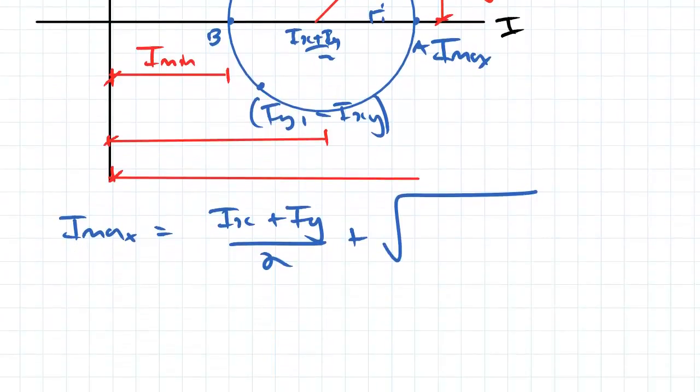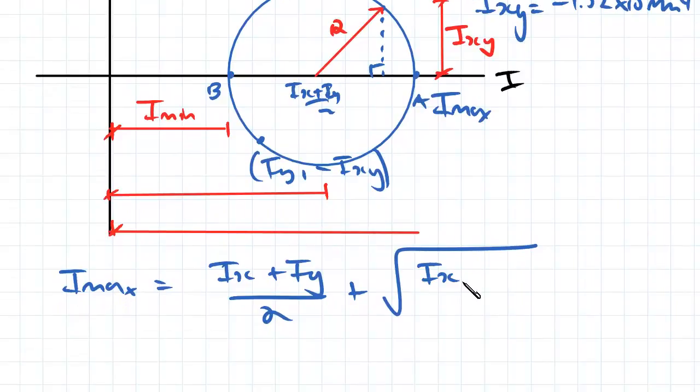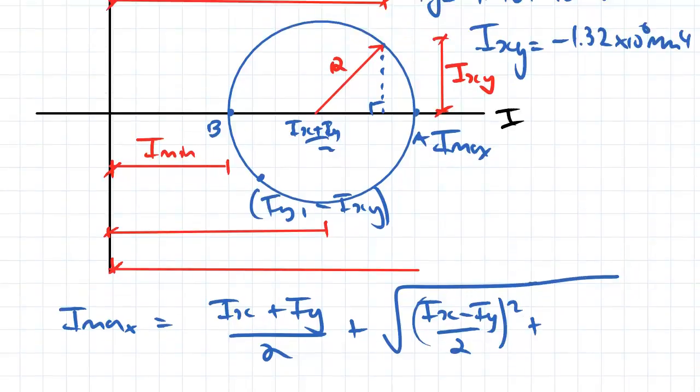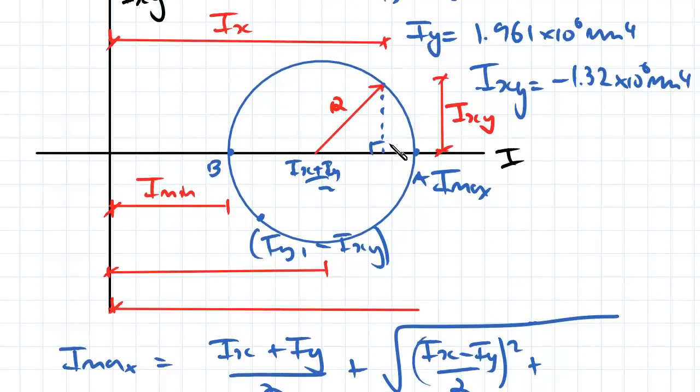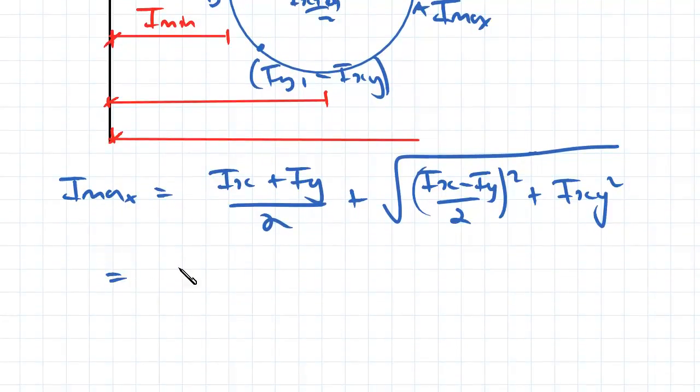And if you work that out, simplify that algebraic expression, what you'll find is it's equal to Ix minus Iy over 2. So we're going to square that and then we're going to add on the rise here. So run squared plus rise squared is equal to radius squared and that's equal to Ixy squared.